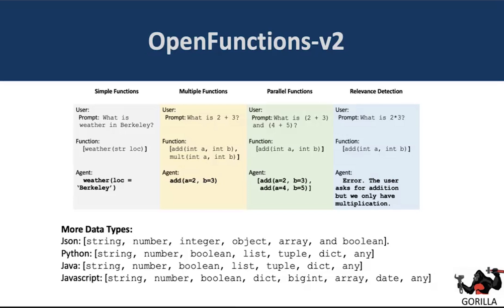We've also built what we call the Berkeley Function Calling Leaderboard. Here we benchmark different models on how they perform on function calling. One unique thing is this is not a static benchmark — we actually deploy and execute the API calls. For example, one call is 'what's the stock price of Tesla?' using Rapid API and Yahoo Finance, and we check whether different models can actually return the stock price. We also measure cost and latency — not just the mean or standard deviation, but also P95 latency — to help you pick the right models for function calling.